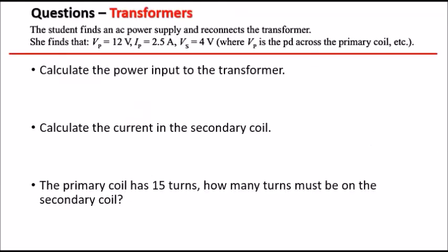So the example I got you guys presented is the following. We have a student finds an AC power supply and reconnects their transformer. She also finds that Vp equals 12 volts, Ip equals 2.5 amps and Vs equals 4 volts, where Vp is the potential difference across the primary coil, etc.